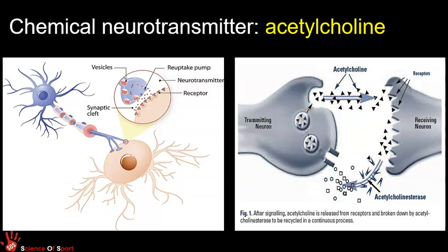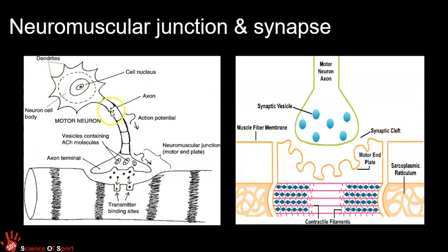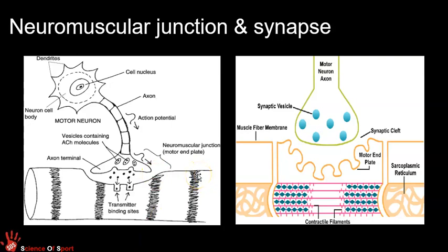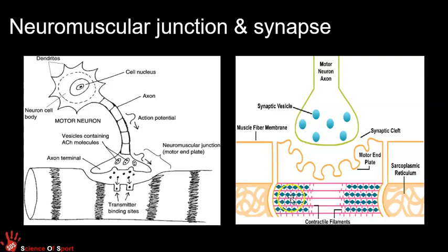Another diagram shows the same process from a slightly different perspective: the action potential comes down the nerve cell, the vesicles migrate to the pre-synaptic membrane or axon terminal, ACh is released and crosses the synapse into the receptor sites. Importantly, this diagram shows that once the impulse reaches the muscle fiber, it spreads in both directions along it. We can also see the striations — the stripes of skeletal muscle tissue — which will be covered in much more detail in the next video.